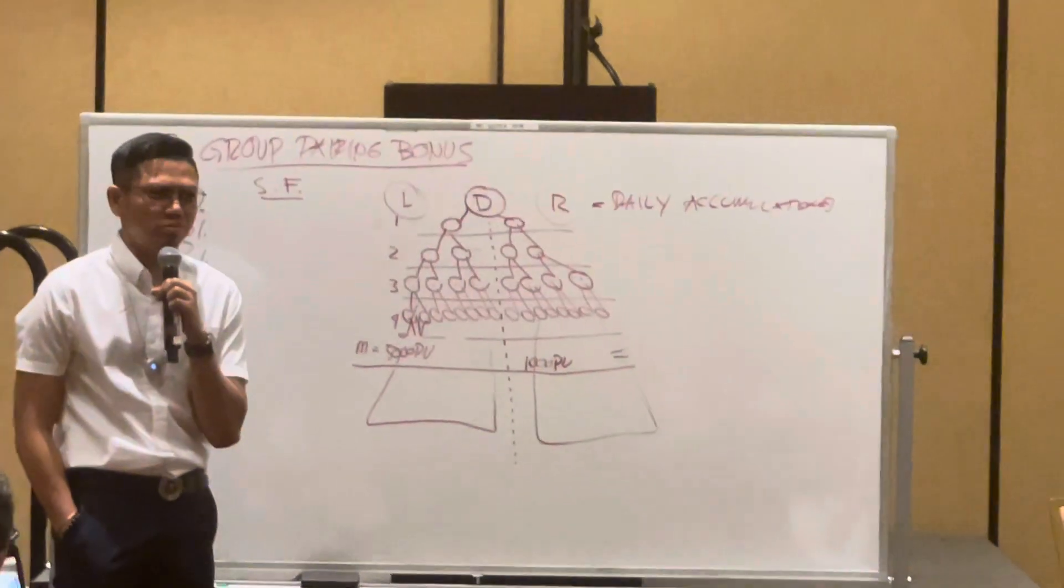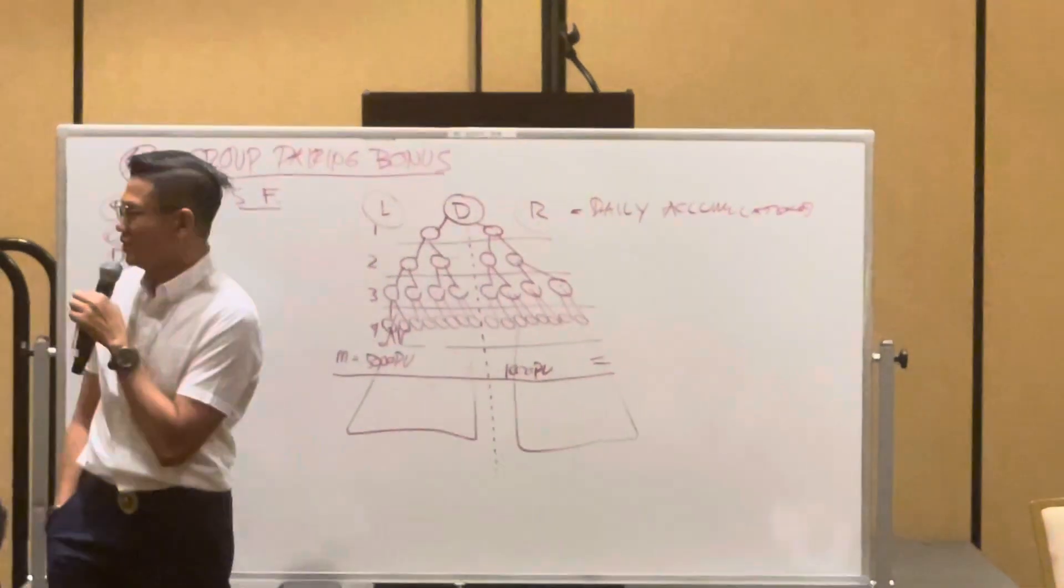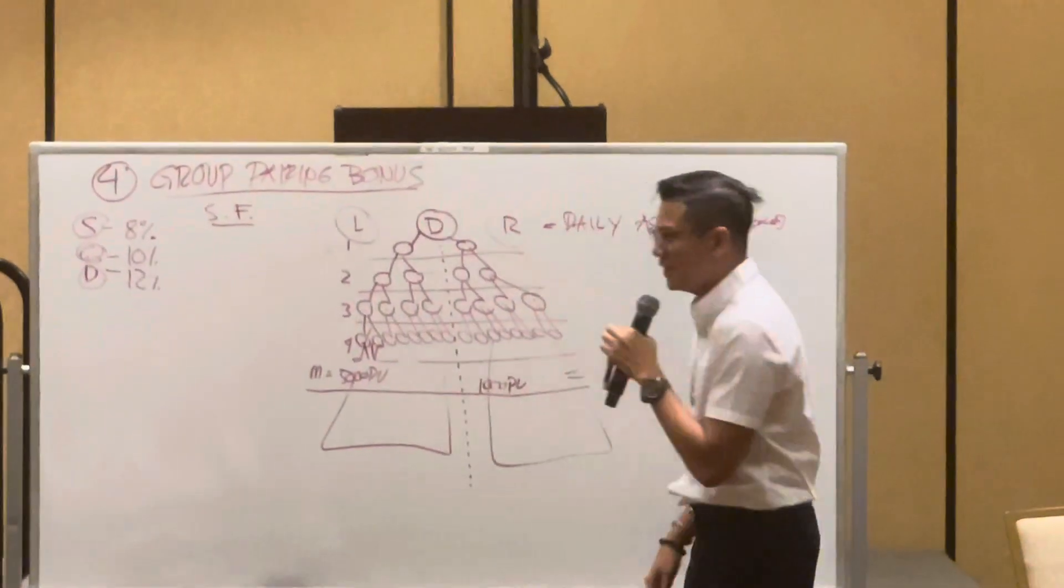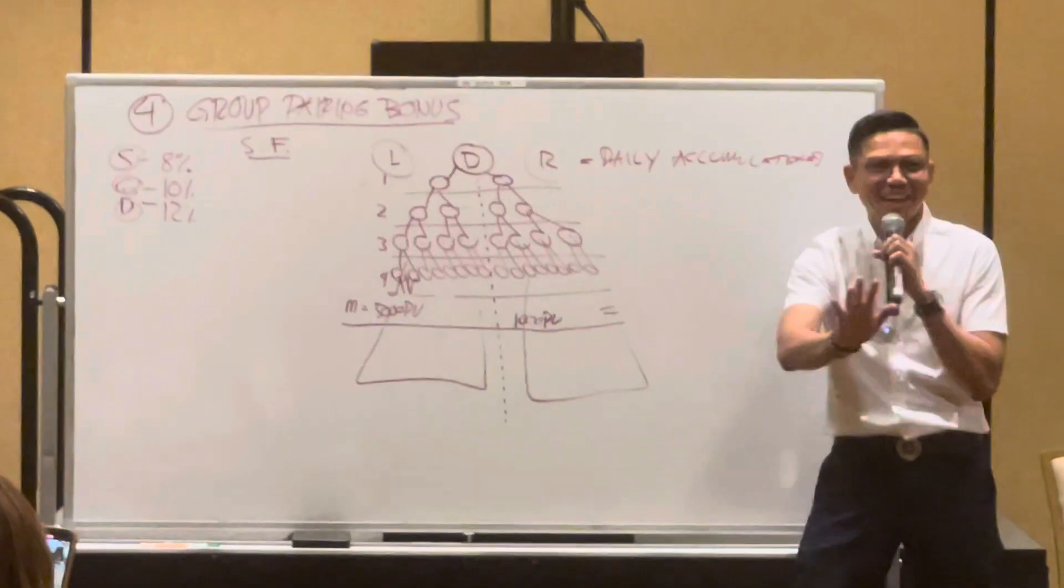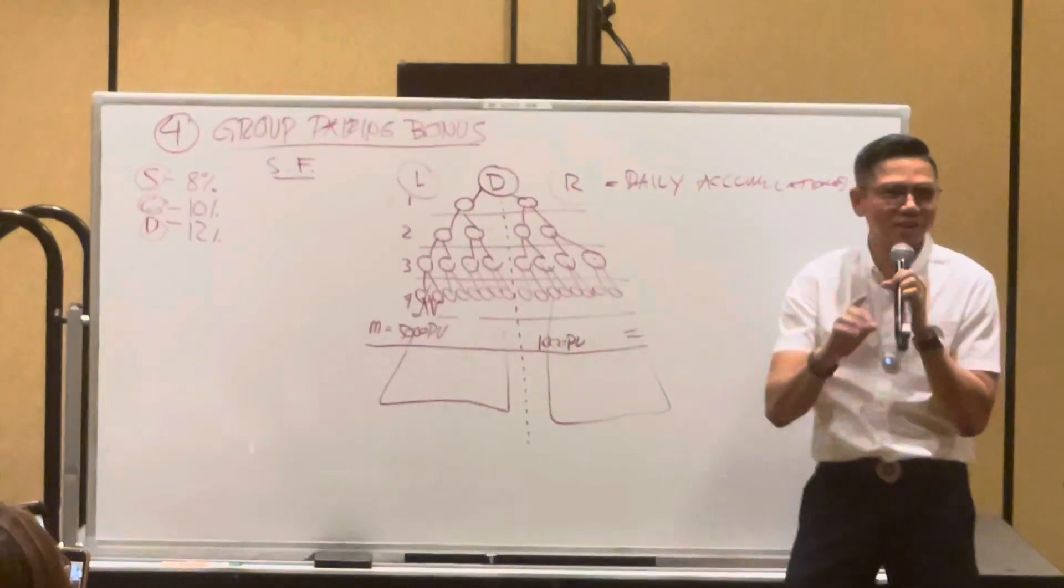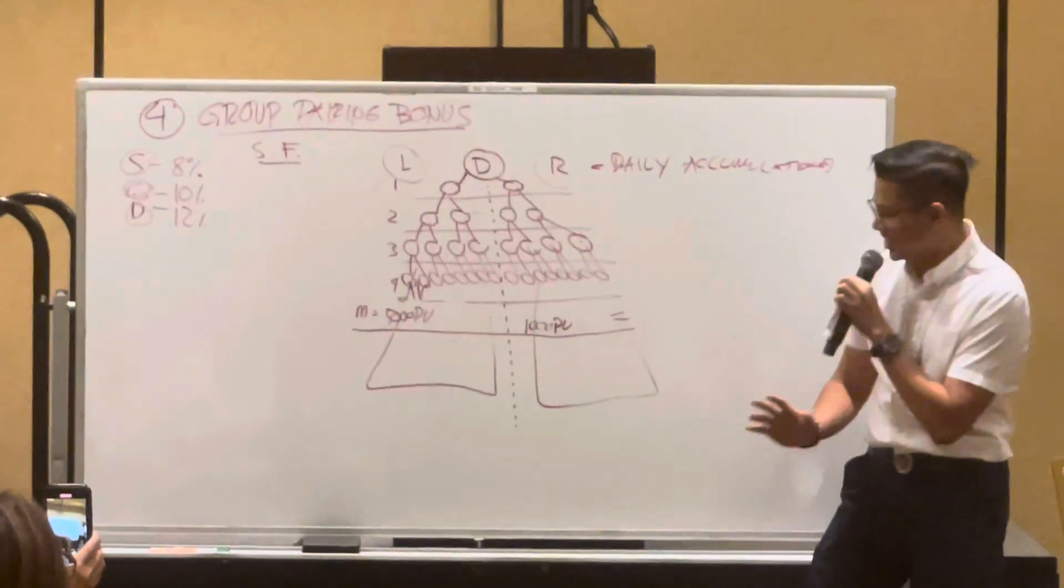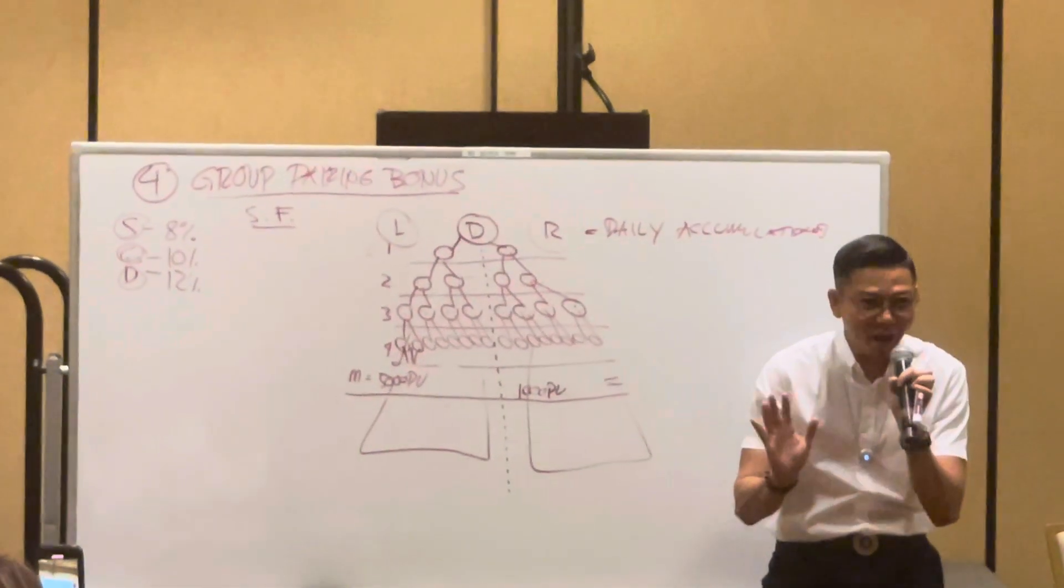This is my question, class. You got 5,000 on your left, accumulated points, entire left network. 10,000 accumulated points, entire right network. You are a diamond. How much is your income on a Monday? Somebody got it. Somebody got it. 600. Yes, yes. Why 600?